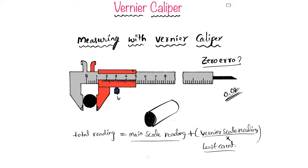For the main scale reading, look at where the zero line of the vernier scale coincides with any division on the main scale. In this example, the main scale reading is 15 mm.